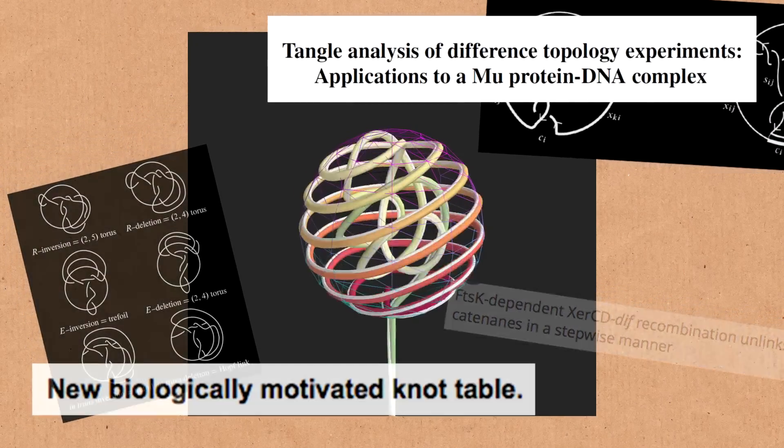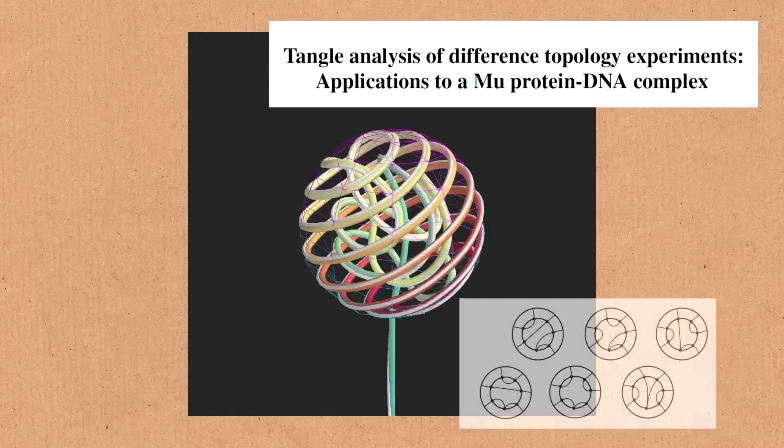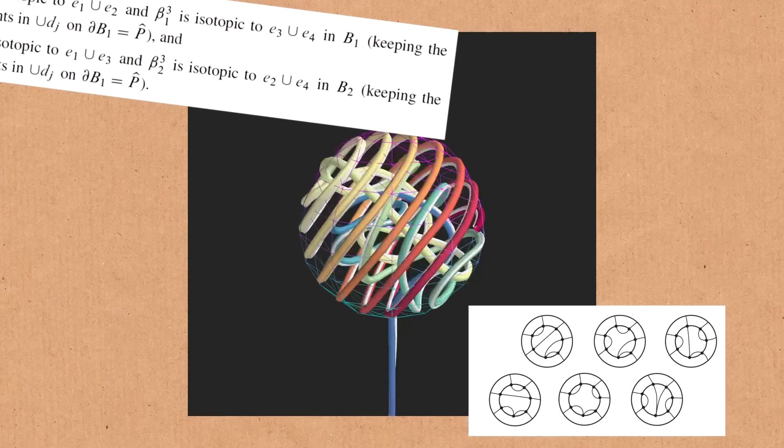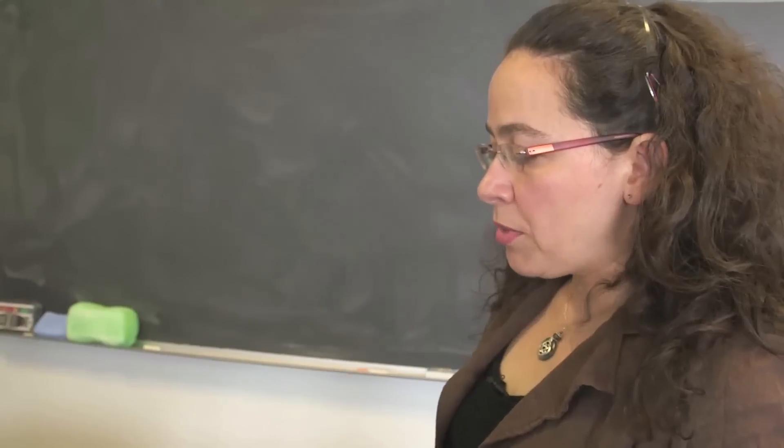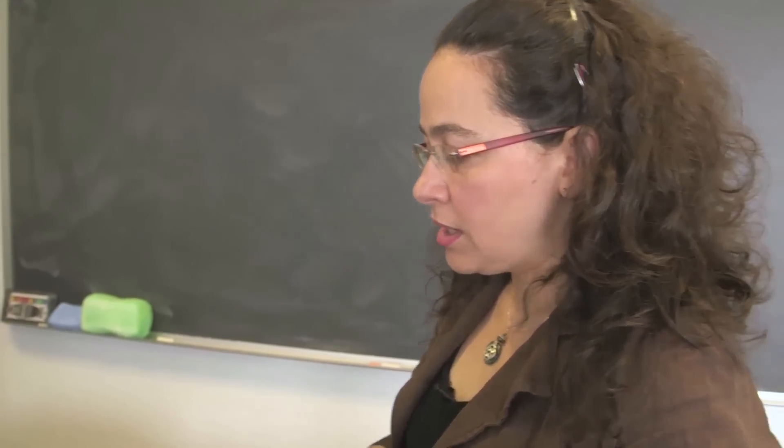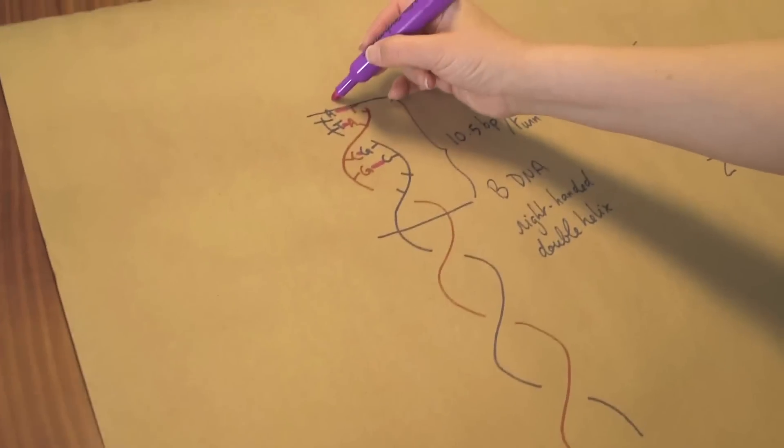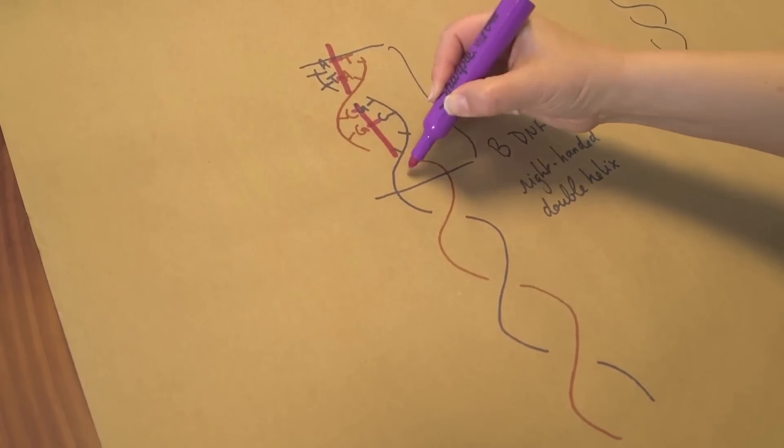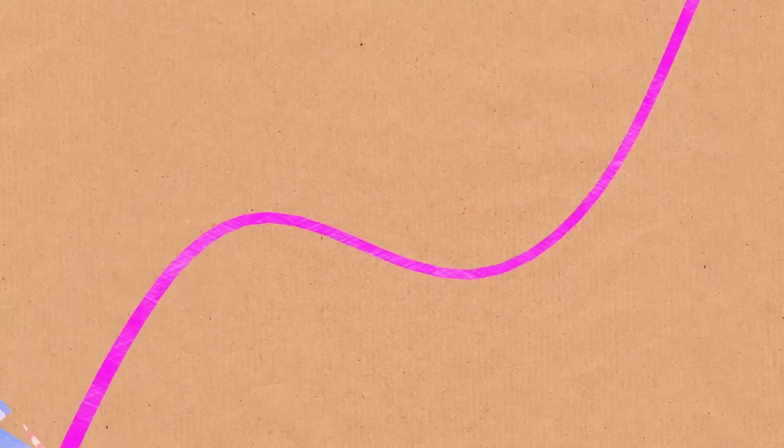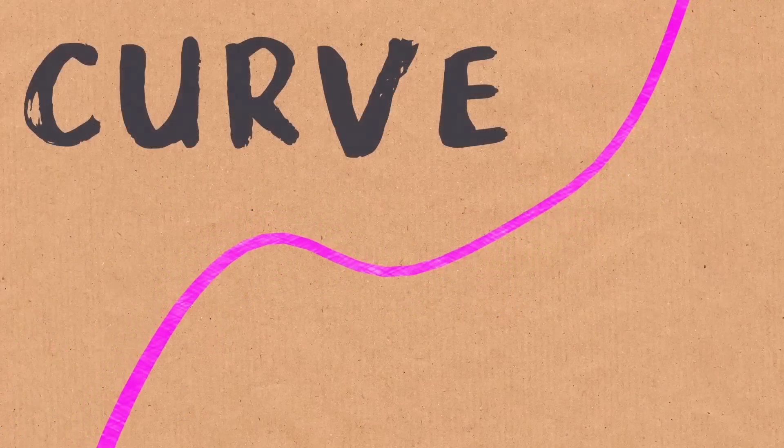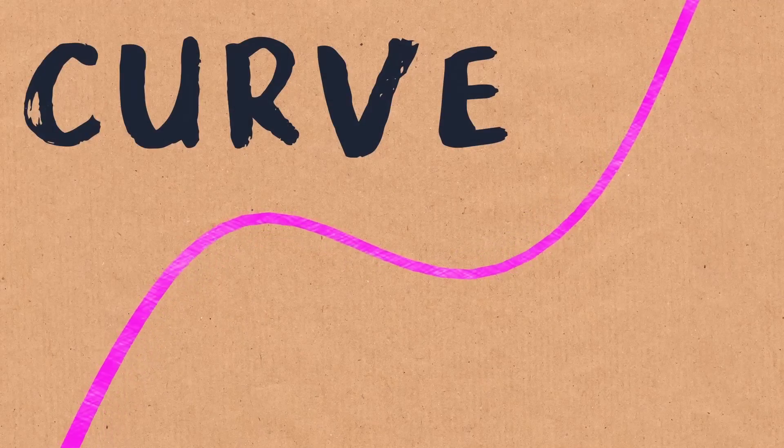We're interested in looking at DNA as either a ribbon or just as a curve. When we model DNA as a curve, we're talking about the curve drawn by the axis of the double helix. So this DNA molecule will be modeled as just a curve that is properly embedded in three-dimensional space.